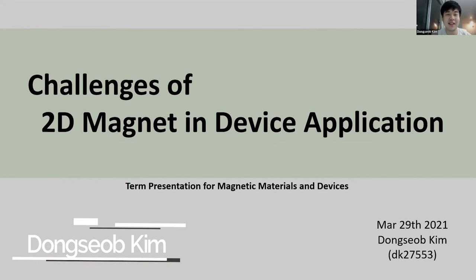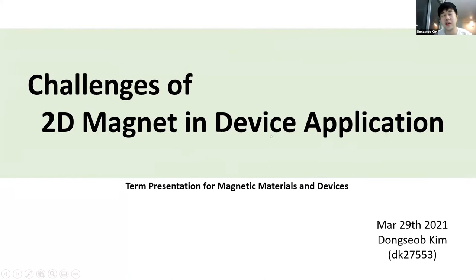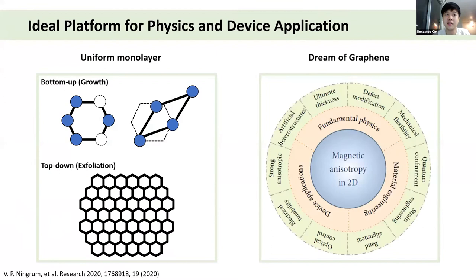Today I'm going to talk about the challenges of 2D magnets and device applications, and how we can overcome them based on several reference papers. One of the main research streams nowadays is 2D research, and to do that research we need very thin monolayer samples. The famous materials in 2D research are graphene or TMDs, but for 2D magnetic research we need to prepare 2D magnetic materials.